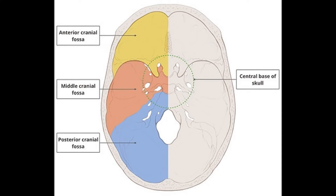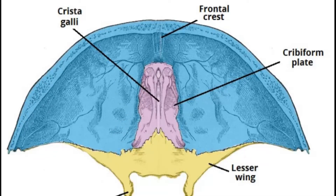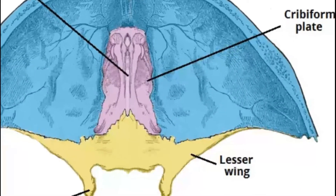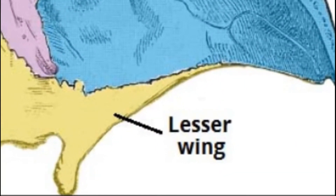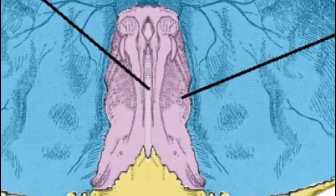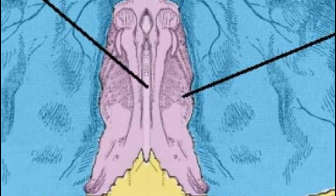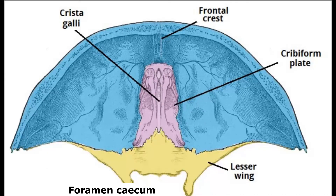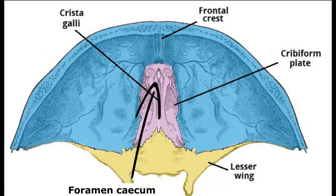Starting with the anterior cranial fossa, you need to remember three things: one, the lesser wing of the sphenoid bone; two, the cribriform plate and the crista galli — this is important because the first cranial nerve, the olfactory nerve, starts from here with the olfactory fibers, olfactory bulb, and tract; and three, foramen cecum, which is a transit for the emissary vein going into the superior sagittal sinus.